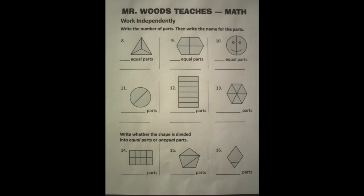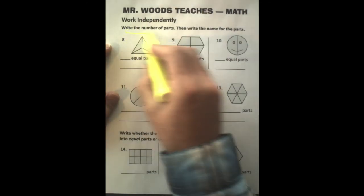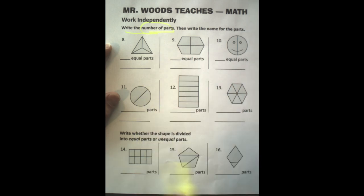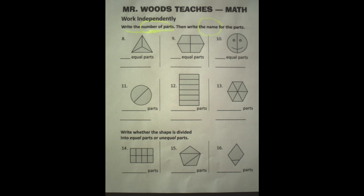Now I'm not going to give you too much help here. All I'm going to do is just point out the obvious. So when we're looking here, we want to read the directions, write the number of parts, then write the name for the parts. So for example, I'm going to give you number one, or rather number eight.